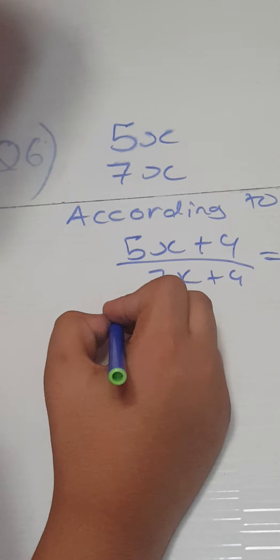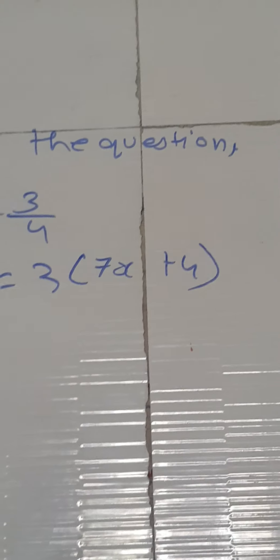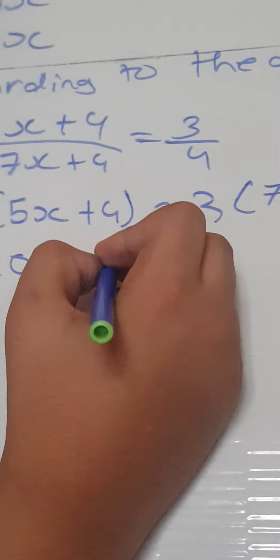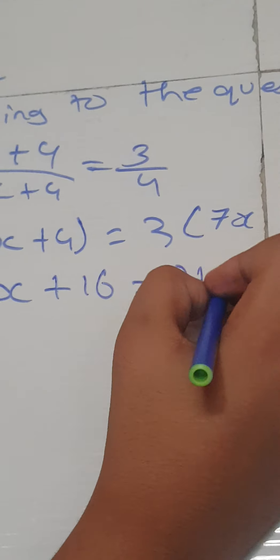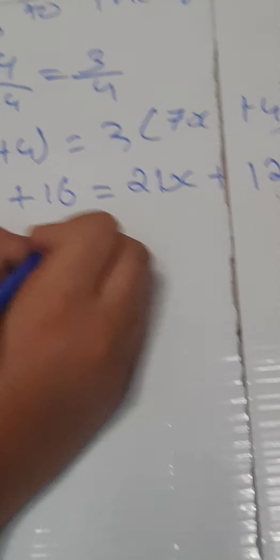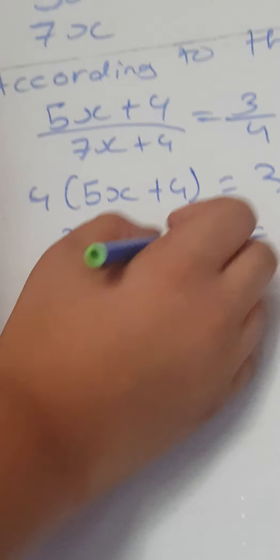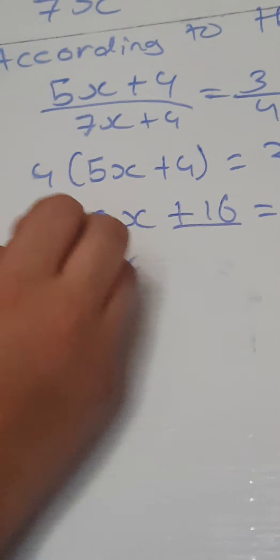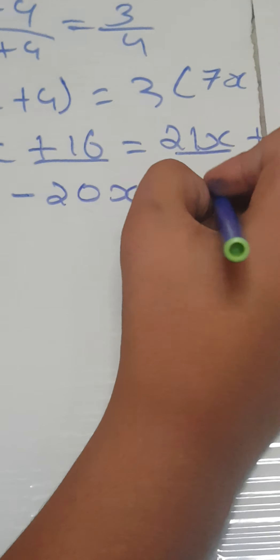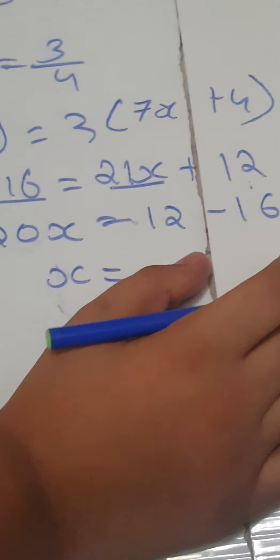We need to do cross multiplication. So 4 is multiplied by 5x plus 4, and 3 is multiplied by 7x plus 4. So here 20x plus 16 which is equals to 21x plus 12. Now while transposing, we will transpose 16 to the right and 21x to the left, which will be 21x subtracted by 20x which is equals to 12 subtracted by 16. So we will get 1x, or x is equals to minus 4.